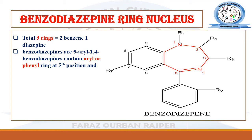At the fifth position of the diazepine ring, all benzodiazepines contain another benzene or phenyl ring. That is why they are termed as 5-aryl-1,4-benzodiazepines.